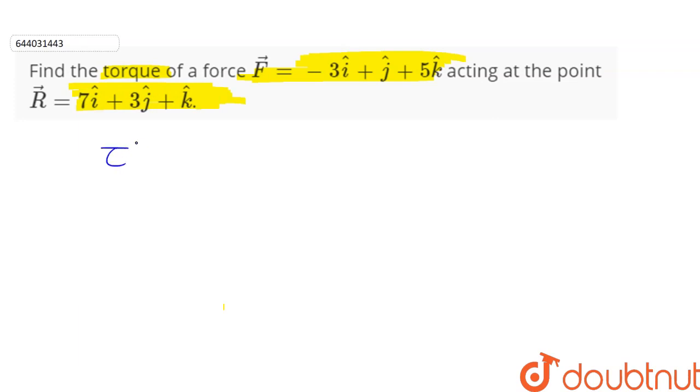The torque tau is equal to cross product of r vector with f vector. It is important to note that r vector comes before f vector while doing the cross product to find the torque.